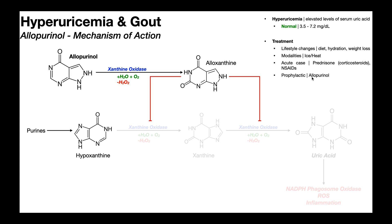Allopurinol is not used during an acute case of gout — that would actually tend to make the gout worse. Instead, you wait until the gout has completely resolved and you're in remission, and then you could start using allopurinol as a preventative measure. When the gout is in remission and you're not having an acute flare-up, allopurinol inhibits xanthine oxidase, prevents hypoxanthine from being converted into xanthine, reduces uric acid formation, and should reduce the frequency of gout attacks.